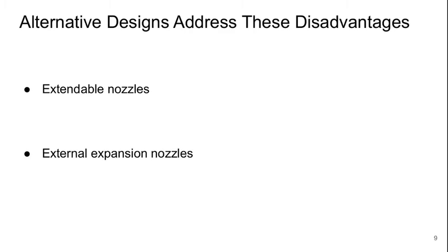Welcome to Part 3 of Lecture 3 of Aerospace Propulsion. We can use alternate rocket nozzle designs to address the disadvantages of the typical bell-shaped nozzle. We'll talk about two of these today: the first is an extendable nozzle and the second is the external expansion nozzle.